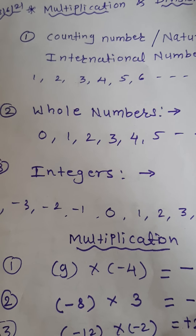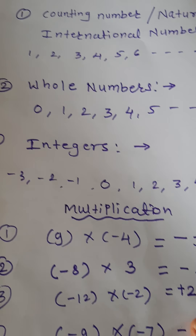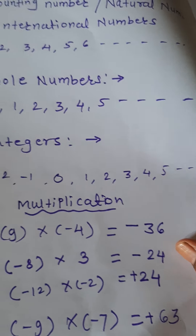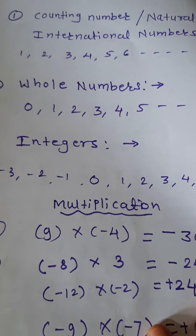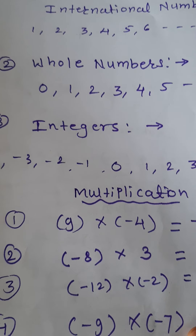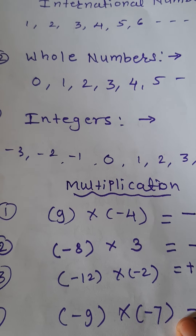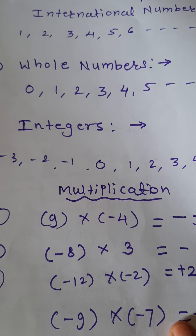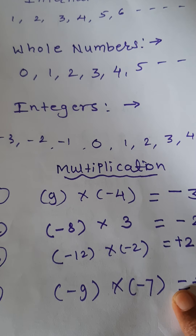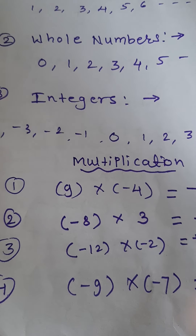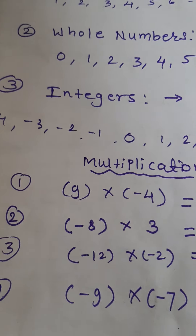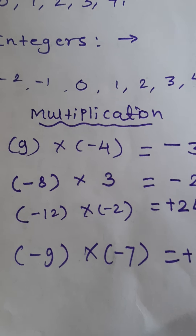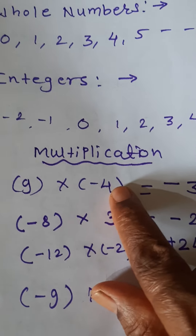Now, what is meant by integers? You understood natural numbers: 1, 2, 3, 4, 5, 6 and so on. 1 is the least natural number — least means smallest. If we add 0 to the natural numbers group, we get a new group called whole numbers. In integers, 0 is there, all positive numbers are there, and all negative numbers are there. This group is called integers. So in this lesson, we are going to study multiplication and division of integers.